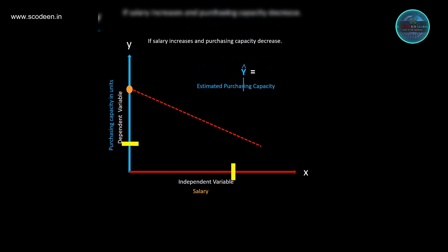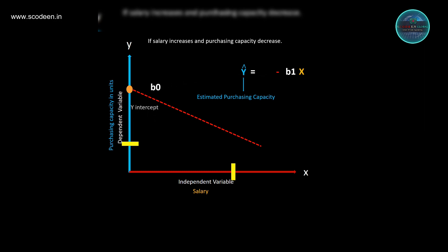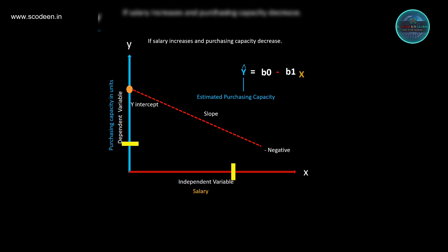For a negative relationship, the equation will be: y = b0 − b1x, where y is the estimated purchasing capacity, b0 represents the y-intercept, the negative sign is placed for the negative slope, b1 represents the slope, and x represents the independent variable — that is, salary.